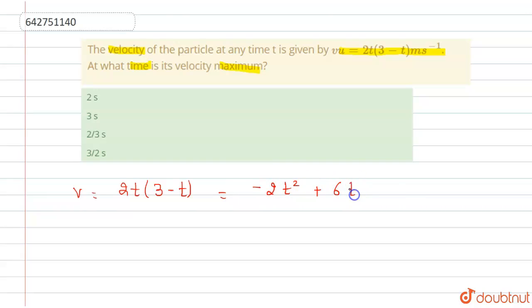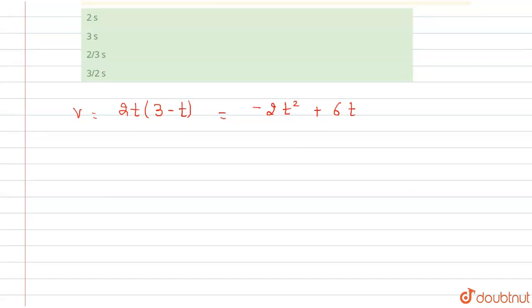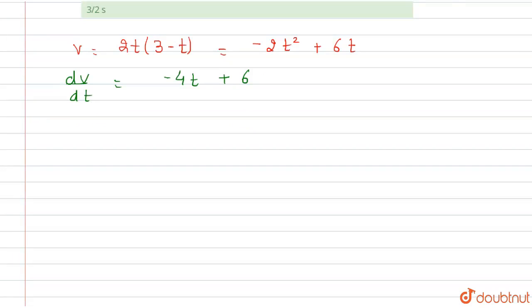And if we differentiate, we get dv/dt equals -4t + 6. For v maximum...